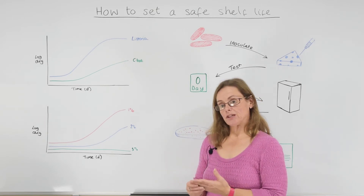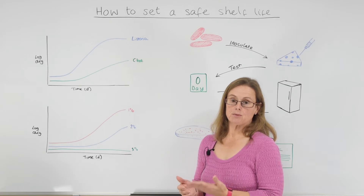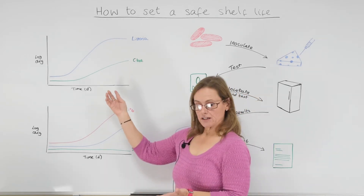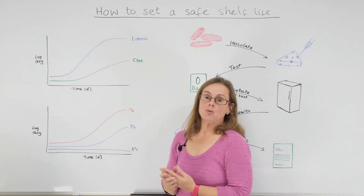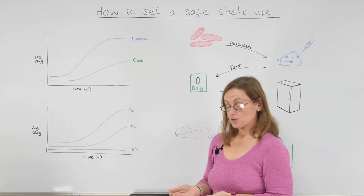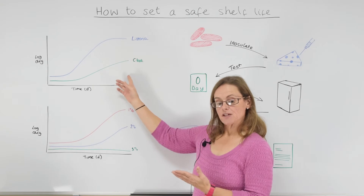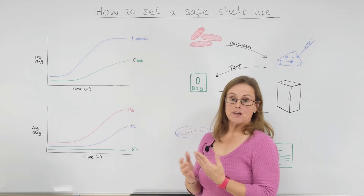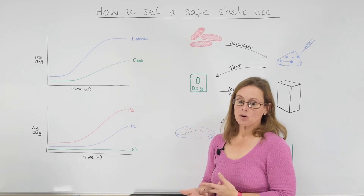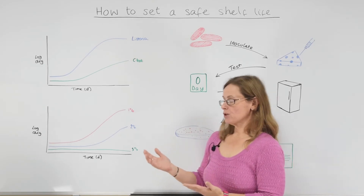So you can take those organisms and use a really easy-to-use computer modelling system where you generate growth curves like these. What you can do is think about what organisms are important and then produce growth curves so that you are able to see whether the organisms will grow under the temperature, pH, salt, and water activity conditions of your product.